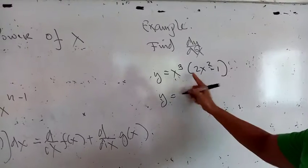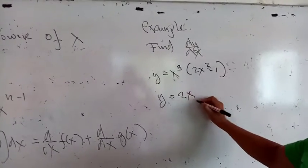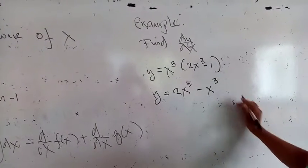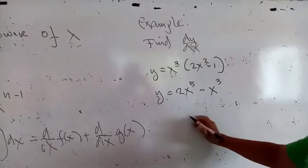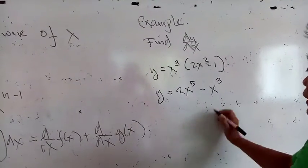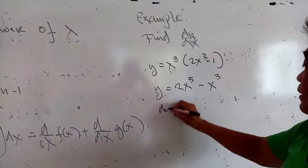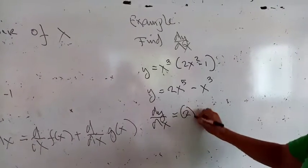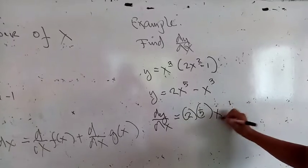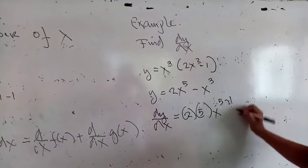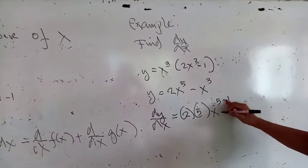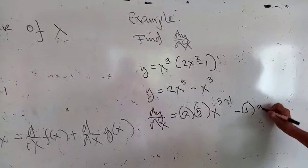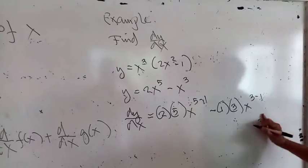y will be multiplied: that will be 2 times 1, that will be 2x, 2 plus 3 that will be to the 5th power, then minus x to the third power. The derivative of y with respect to x will be: your c is 2, times your exponent 5, times x to the 5 minus 1, using formula number 2. Then minus the numerical value 1, multiplied by your exponent 3, times x to the third power minus 1.